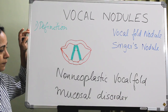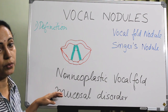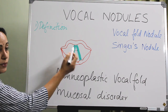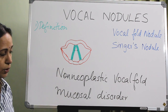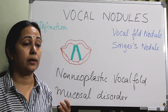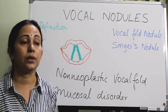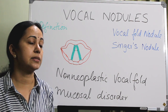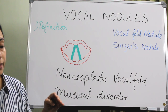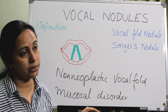Definition: vocal nodule is defined as a non-neoplastic vocal fold mucosal disorder occurring on the free border of the true vocal cords. Other conditions in this category include vocal cord polyp, contact ulcers, and intubation granulomas — all coming under non-neoplastic vocal fold mucosal disorders.